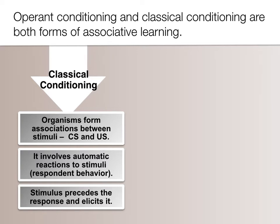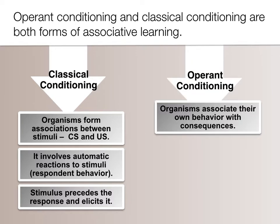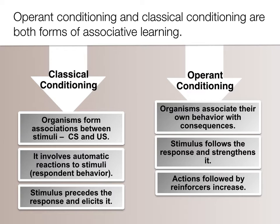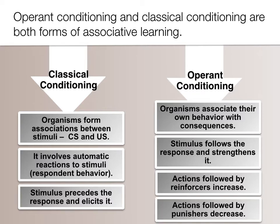Classical conditioning involves automatic reactions where the stimulus precedes and elicits the behavior, and associations are made between our unconditioned stimulus and conditioned stimulus. In operant conditioning, organisms are associating their own voluntary behavior with its consequences — a stimulus that follows the response and strengthens it. There are two kinds of stimulus that can happen: reinforcers, which increase the likelihood of that behavior happening again, and punishers, which decrease the likelihood of that behavior happening again.